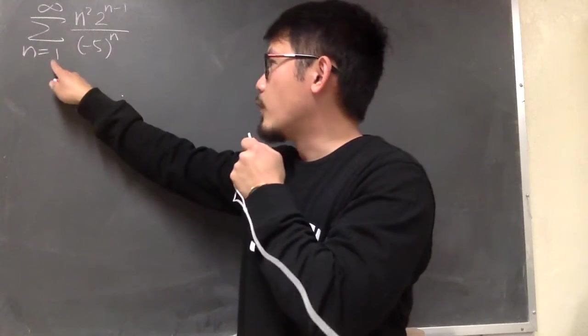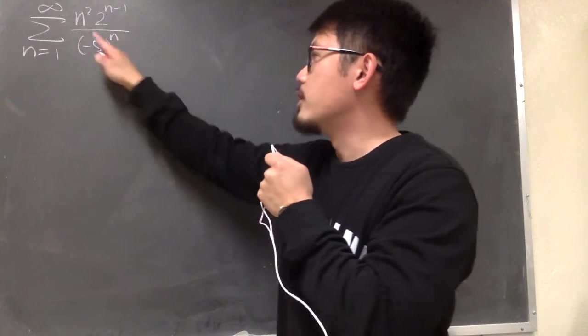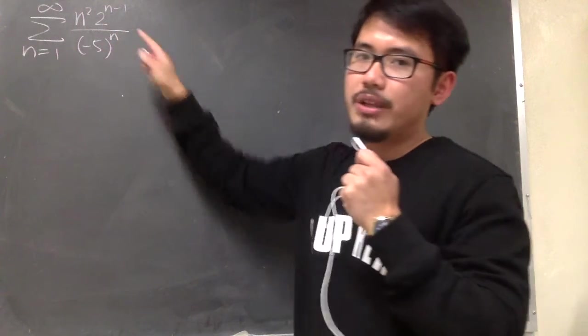Converge or diverge, sigma as n goes from 1 to infinity, n squared times 2 to the n minus 1 power over parentheses negative 5 to the nth power.